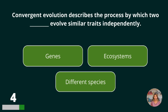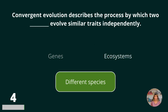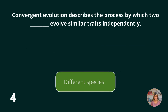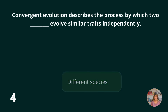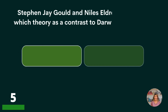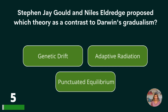Convergent evolution describes the process by which two what evolve similar traits independently? Genes, ecosystems, or different species? Different species.